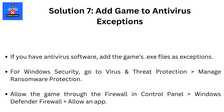Solution 7: Add Game to Antivirus Exceptions. If you have antivirus software, add the game's .exe files as exceptions. For Windows Security, go to Virus and Threat Protection, then Manage Ransomware Protection. Allow the game through the Firewall via Control Panel, then Windows Defender Firewall, then Allow an App.